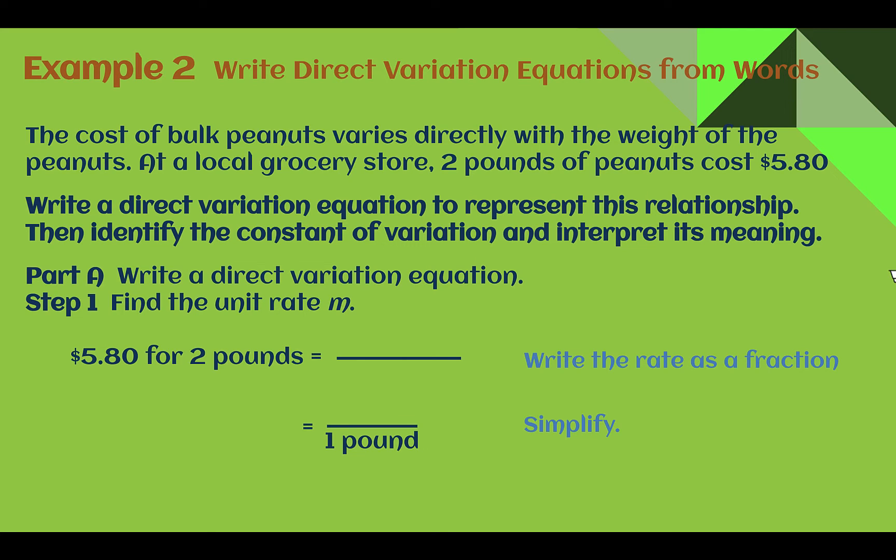Part A, write the direct variation equation. To do that, we need to find the unit rate, which is the slope, which is the constant of variation. It tells us $5.80 is for 2 pounds. So if I can find how much it is for 1 pound, that's my unit rate, which is the same as the slope. So, $5.80 for 2 pounds, let's divide that. We would find that it's $2.90 for 1 pound. So the unit rate here is $2.90 per pound of peanuts.